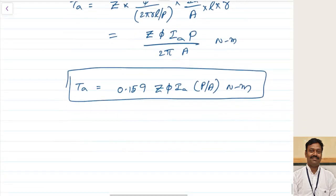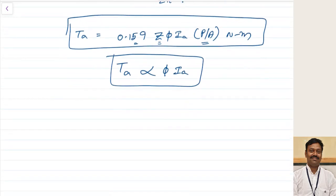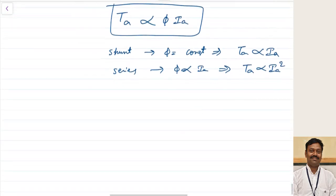This is the total armature torque. Since 0.159 is constant, Z and P/A are also fixed once the machine design is fixed, the only variables are flux φ and armature current Ia. So torque T is proportional to φ into Ia. For a shunt machine, flux φ is nearly constant, so armature torque Ta is proportional to Ia. For a series machine, flux is proportional to armature current, so torque is proportional to Ia squared.